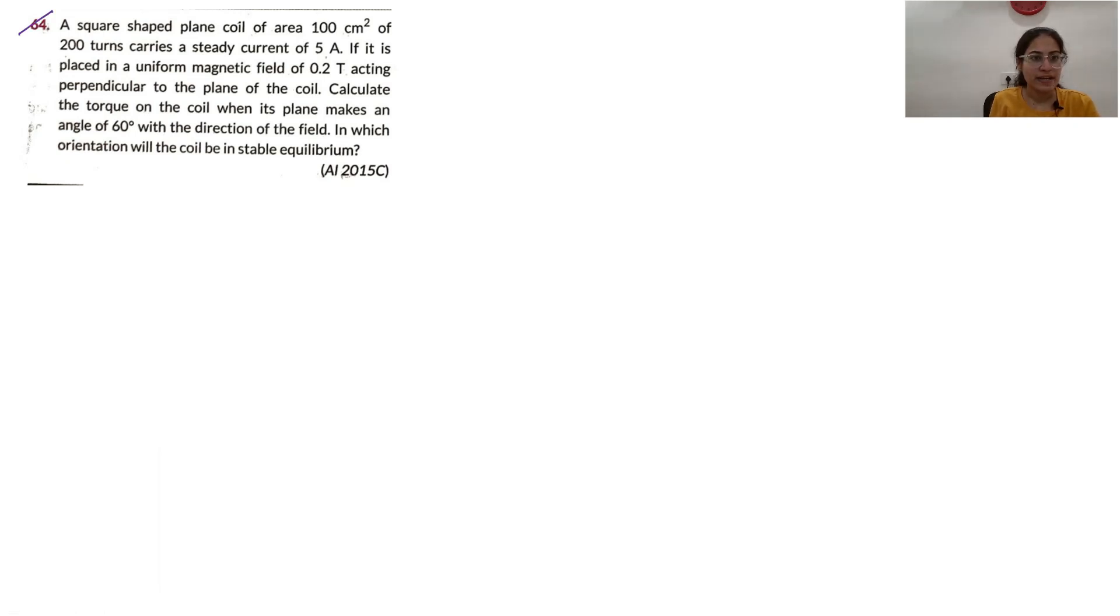Question number 64. A square shaped plane coil of area 100 cm², number of turns 200, carries a steady current of 5 Ampere.